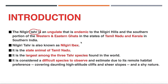Nilgiri Tahr is endemic to the Nilgiri region. Talking about ungulates, they are basically a type of mammal. We have even-toed ungulates and sub-ungulates. Elephant is also a type of mammal. Nilgiri Tahr is a mammal and it is endemic to the Nilgiri Hills, found in two states: Tamil Nadu and Kerala.